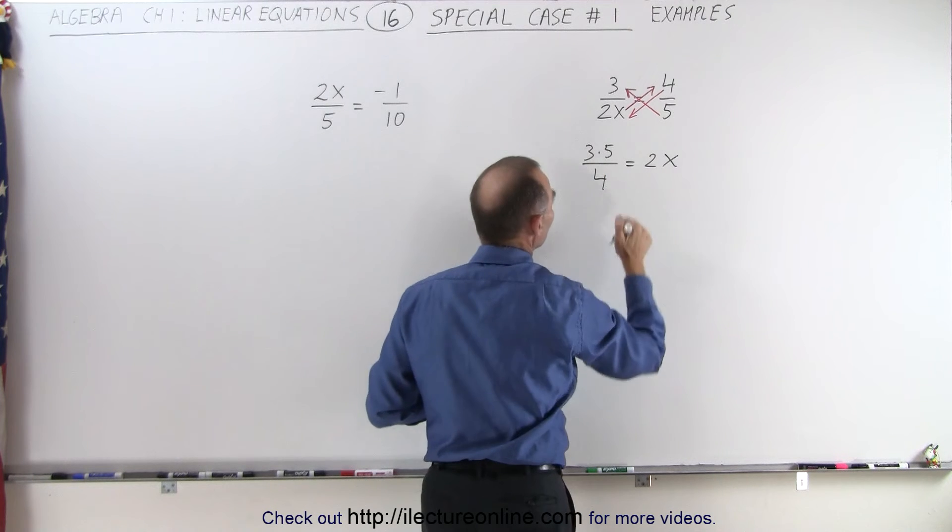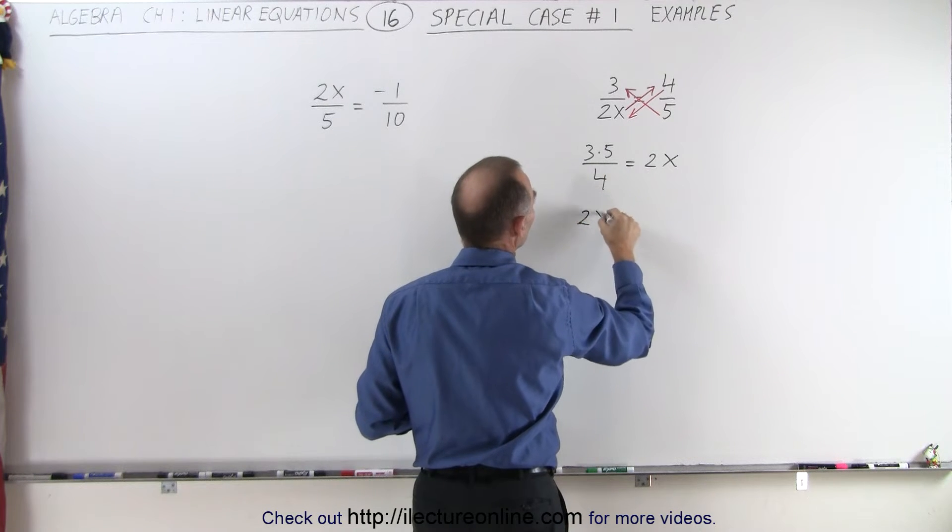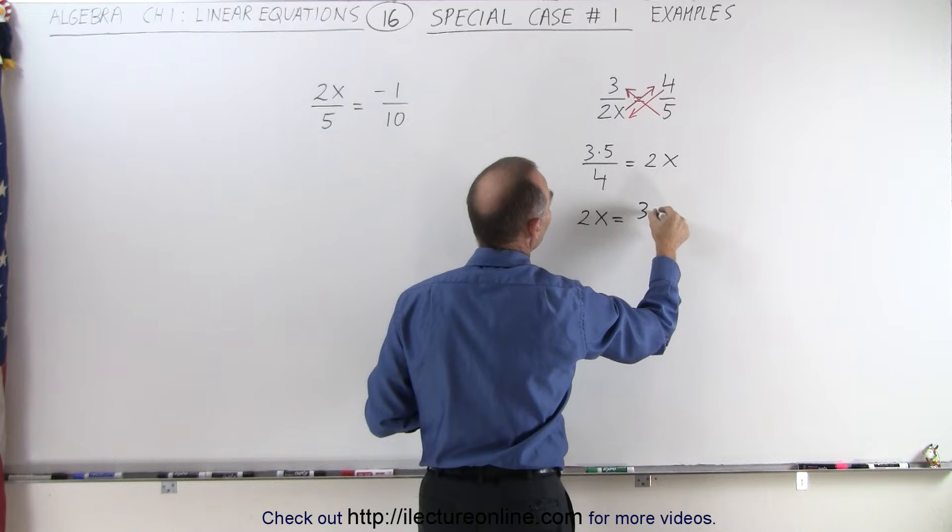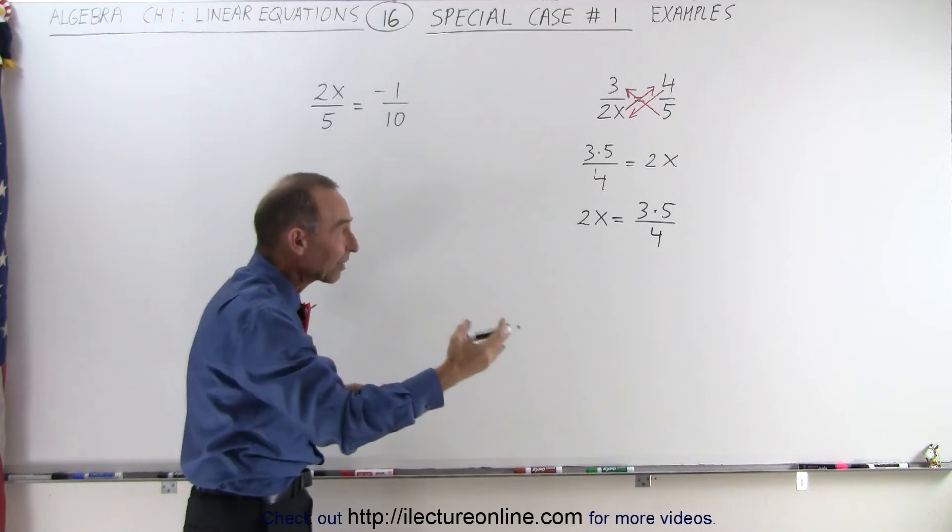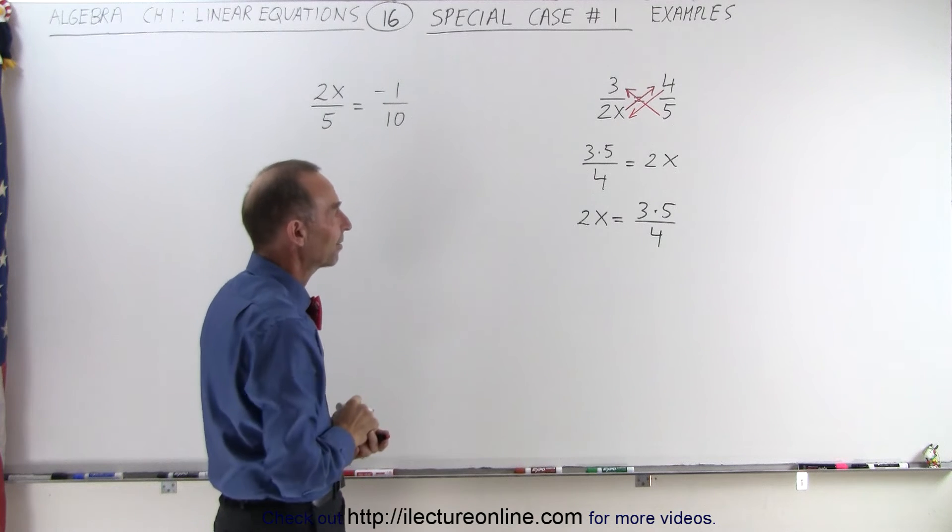Move this to the left and move that to the right. So I end up with 2x equals 3 times 5 divided by 4, because by convention we like to have the x on the left side and everything else on the right side.